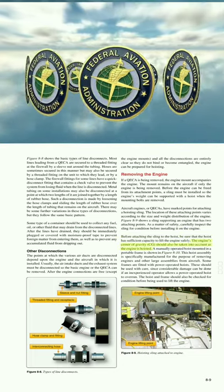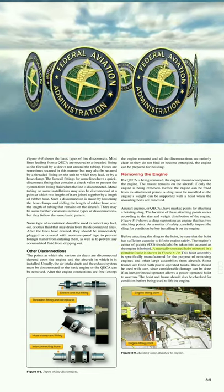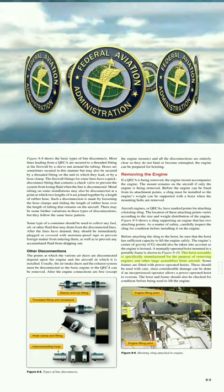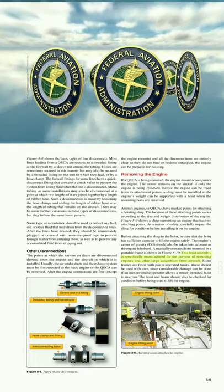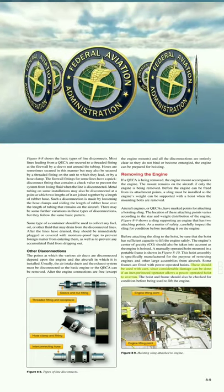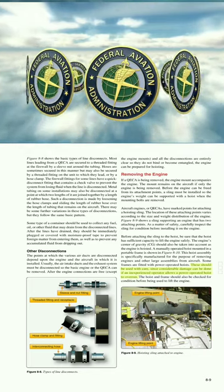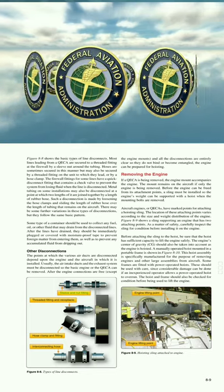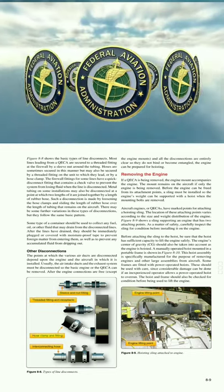The engine center of gravity (CG) should also be taken into account as the engine is hoisted. A manually operated hoist mounted in a portable frame is specifically manufactured for the purpose of removing engines and other large assemblies from aircraft. Some frames are fitted with power-operated hoists, which should be used with care since considerable damage can be done if an inexperienced operator allows the hoist to overrun. The hoist and frame should also be checked for condition before being used to lift the engine.